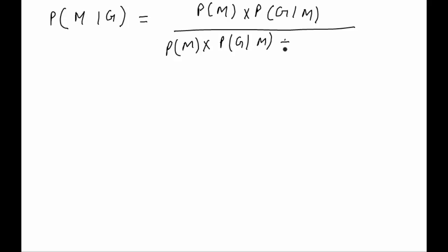Now we are interested in that given we have selected a grey haired person, what is the probability that he was a male. So by Bayes theorem, we can say that it is going to be equal to P of M into P of G given M, upon P of M into P of G given M plus P of F into P of G given F.